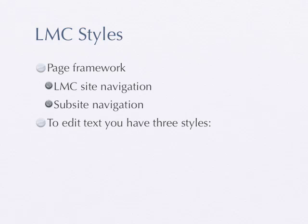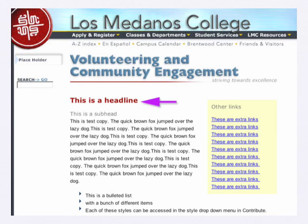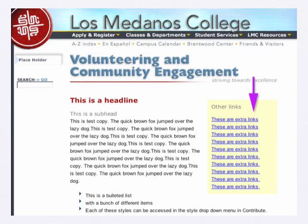There is the text that you can edit, and there are little styles that the webmaster sets up for you so you can choose whether you want a headline, subhead, or body text. It's as simple as a drop-down menu at the top of the page, much like in Microsoft Word. There are extra styles like bulleted lists or you can put links on the side. You can lay out the content however you wish in that editable area — it's only the sub-site navigation and the upper LMC navigation that are off-limits.